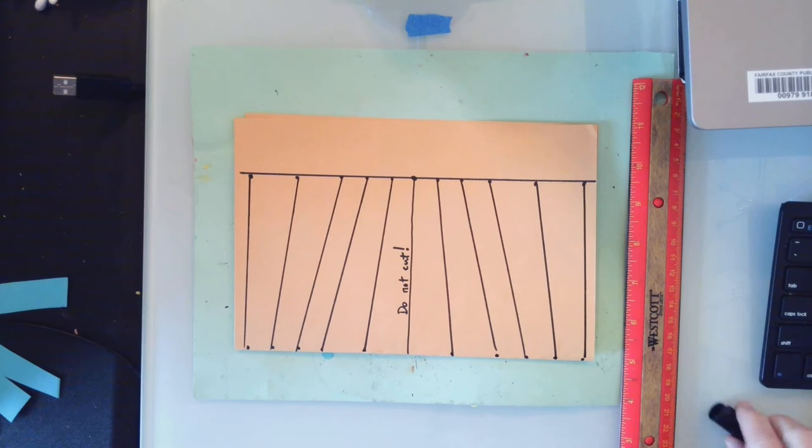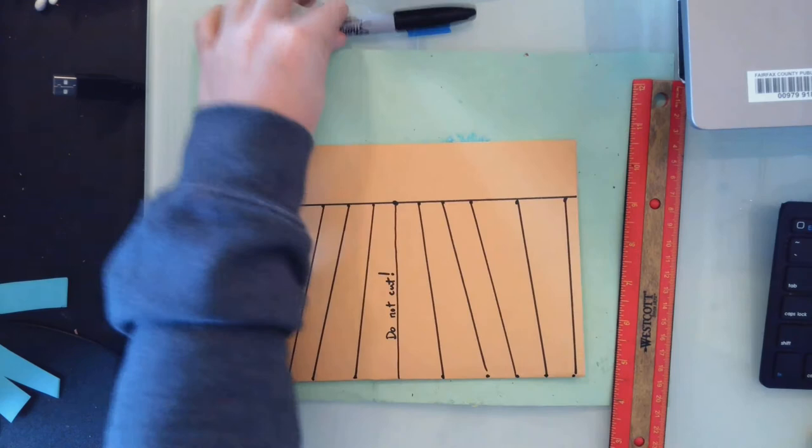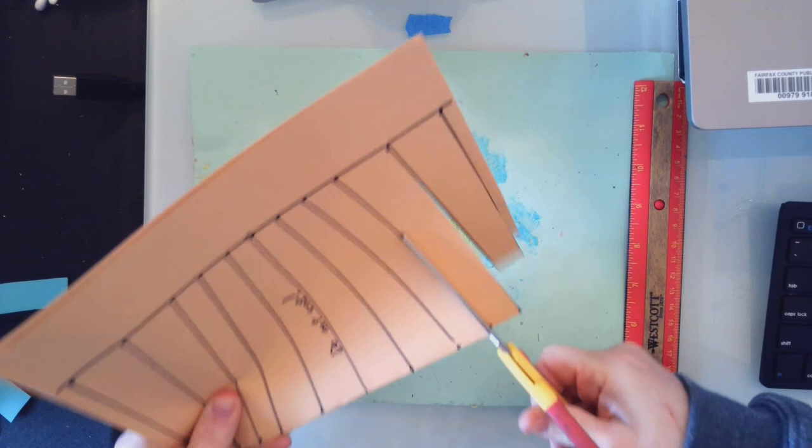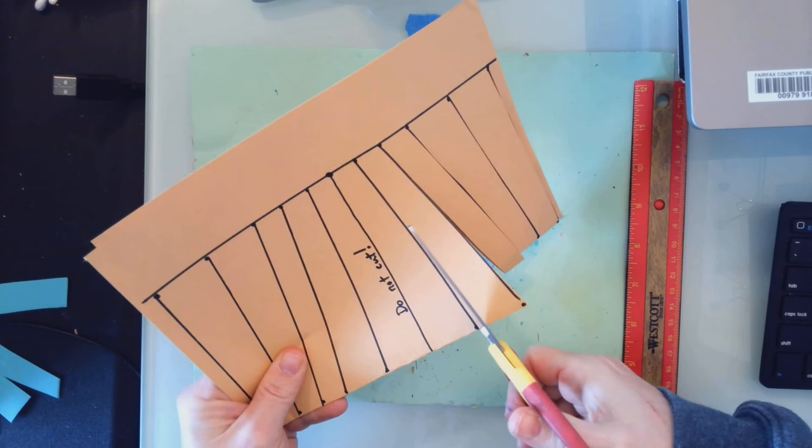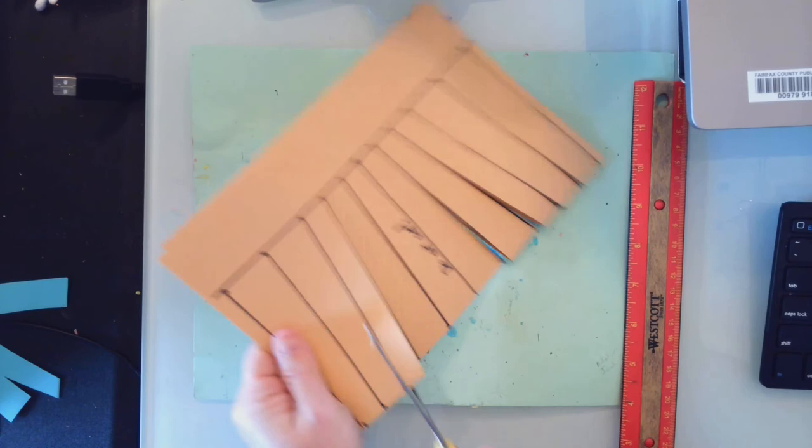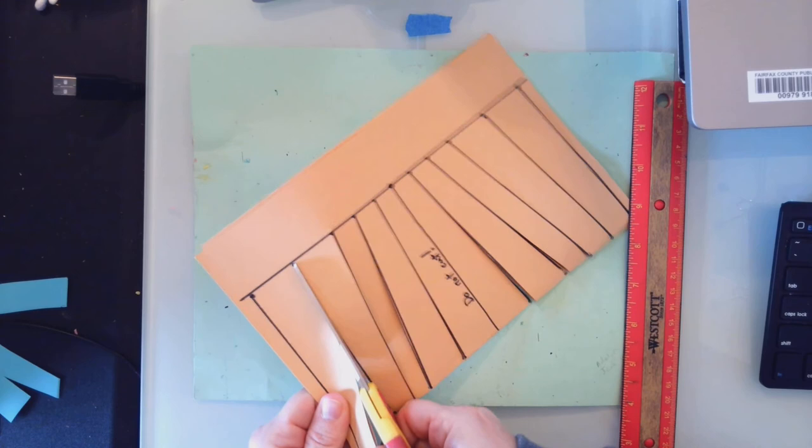And now I'm ready to cut my loom. I'm cutting on all the lines that I just drew except the center line. I'm cutting from the folded edge to that line that I drew across the top, and I'm skipping over the center line. I'm so glad I wrote myself that note so I don't forget it. If you do cut the center line it's not the end of the world. Your op art design might just not look exactly like the example, and that's okay.